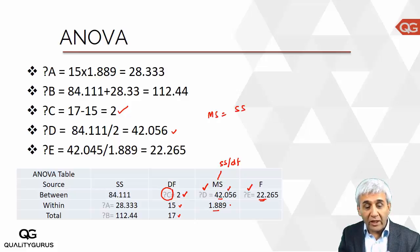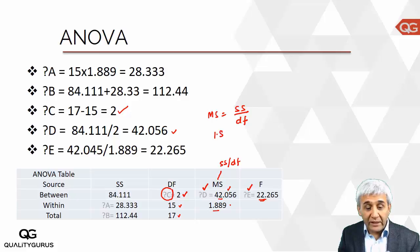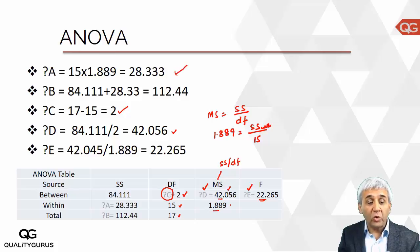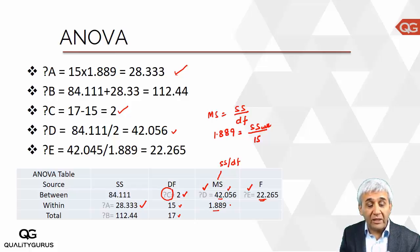Now coming to A — you know that mean sum of squares equals sum of squares divided by degrees of freedom. For within, the mean sum of squares was 1.889, the sum of squares was missing, and degrees of freedom was 15. So sum of squares within = 15 multiplied by 1.889, which gives you 28.33.